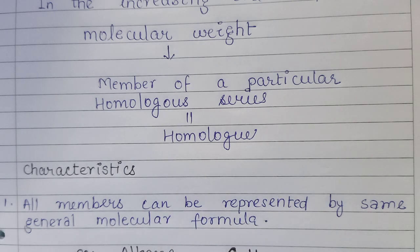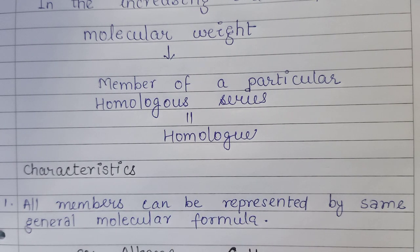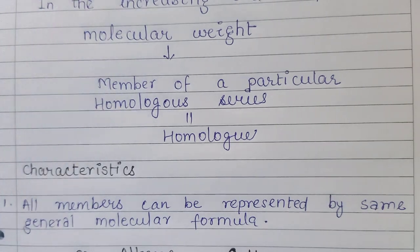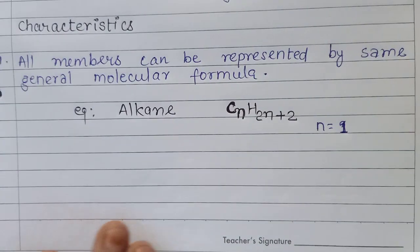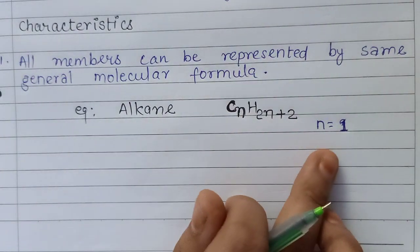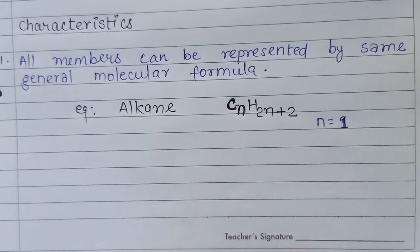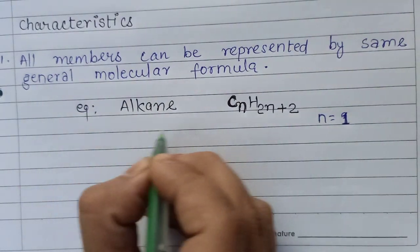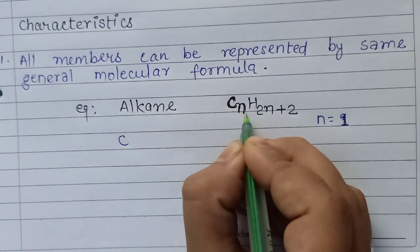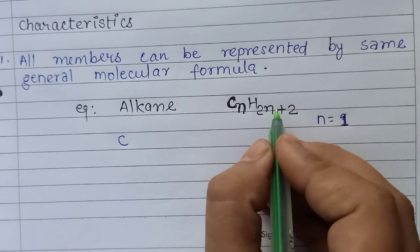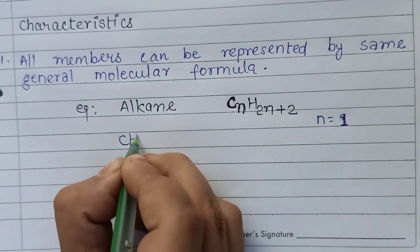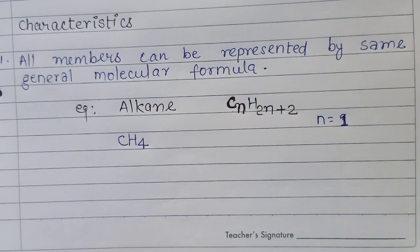If the value of n is 1, then the formula gives CH₄ — that is, C1H(2×1+2) = CH₄. So the first member of the alkane series is CH₄.